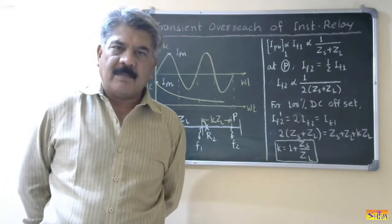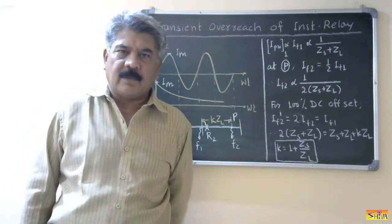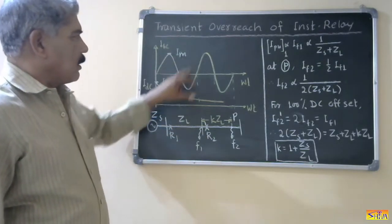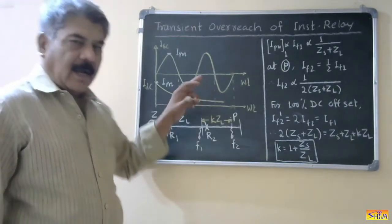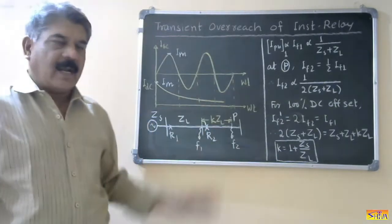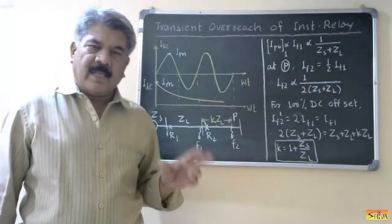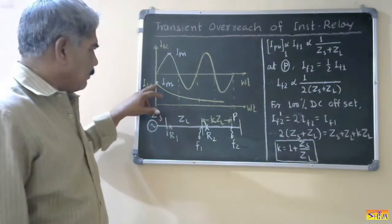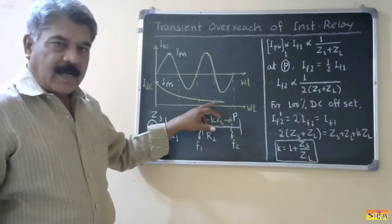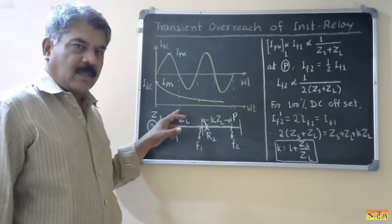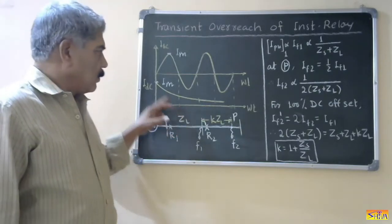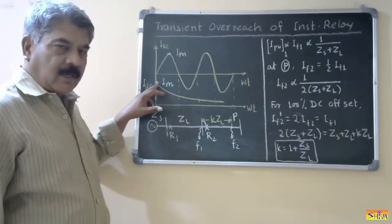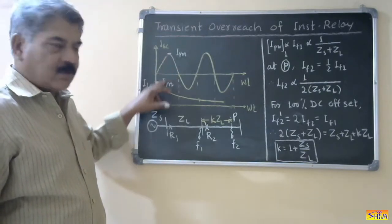First I will explain briefly what the DC offset of the fault current is. When a fault takes place, there is a sinusoidal component of the fault current. In addition to the sinusoidal component, there is one additional component of the fault current which is exponentially decaying, and it is called the DC offset of the fault current.